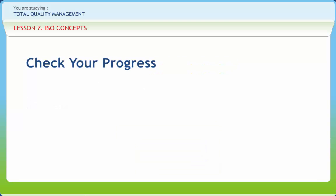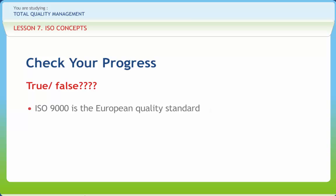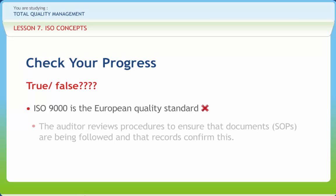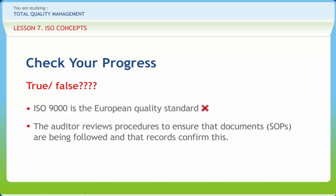Now let us check if you have understood the various concepts discussed in this lesson. ISO 9000 is the European Quality Standard — Wrong. The auditor reviews procedures to ensure that documents and SOPs are being followed and that records confirm this — Right.